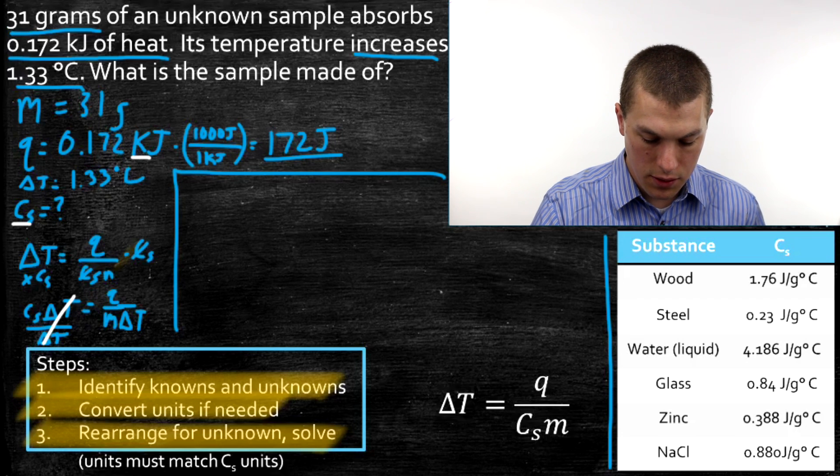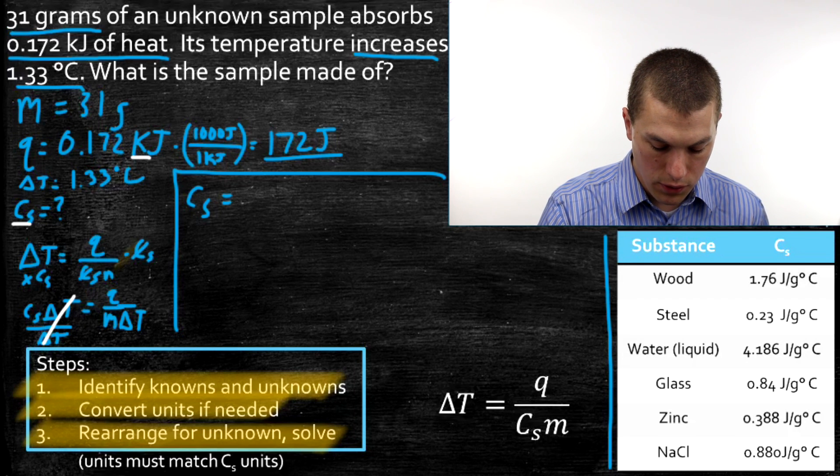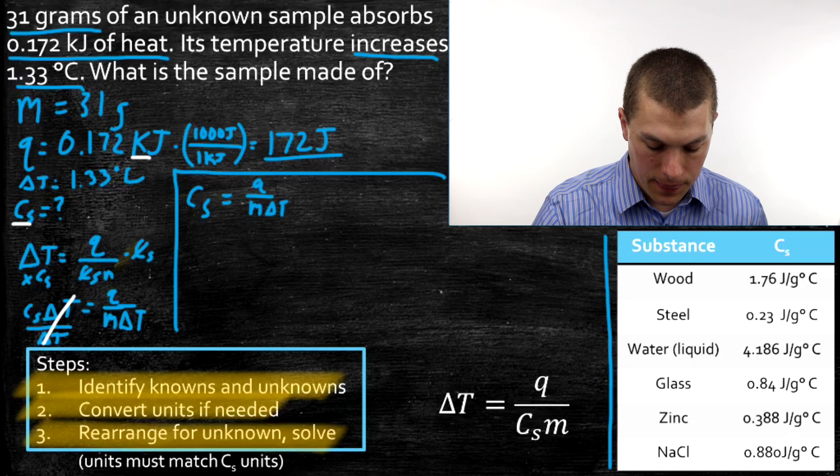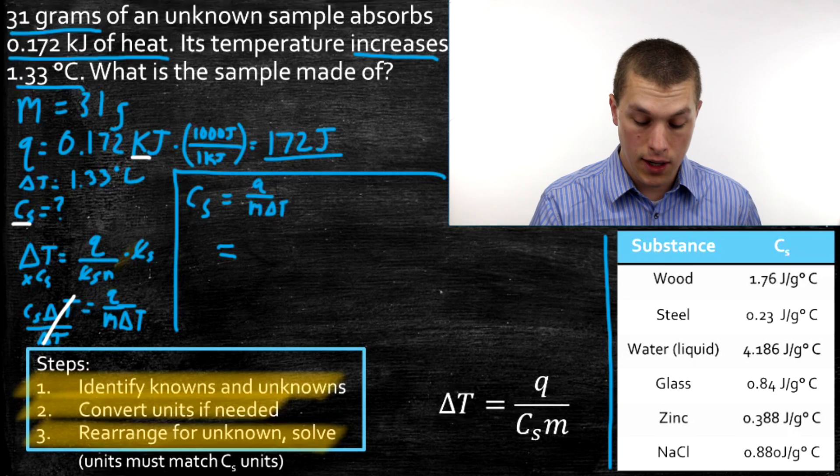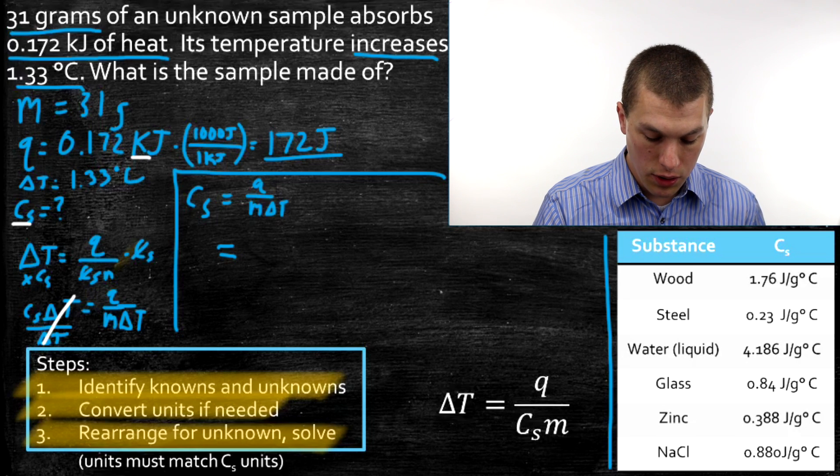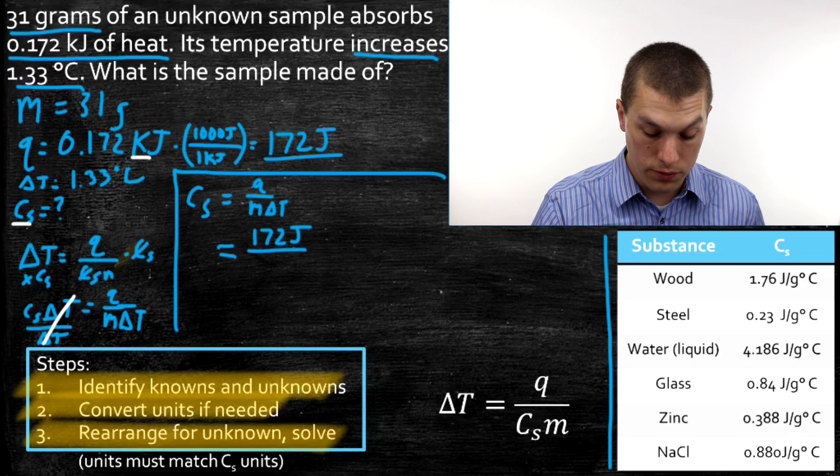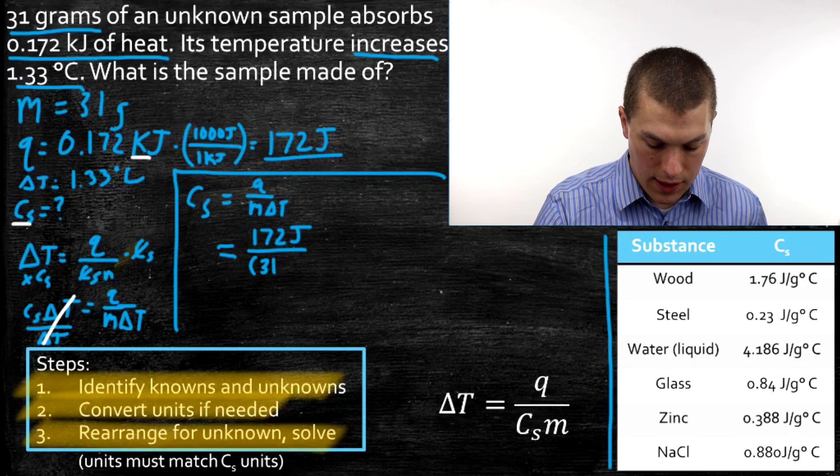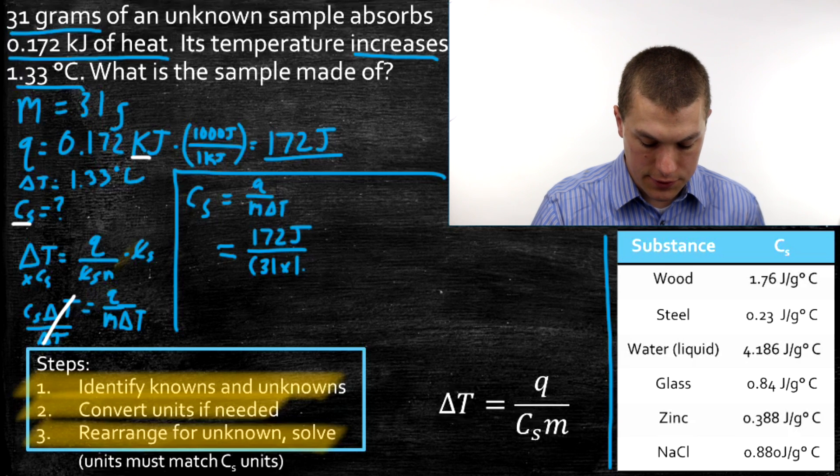So I'll move that equation over here. What we have is Cs is equal to Q over m delta T. And now what we can do is we can go ahead and plug in our variables, which are all in terms of the right units. And our Q, remember, is 172 joules. We have to plug that in in joules if we want to get our heat capacity out with the units of joules. And our mass is 31 grams, and our temperature change is 1.33 degrees Celsius.